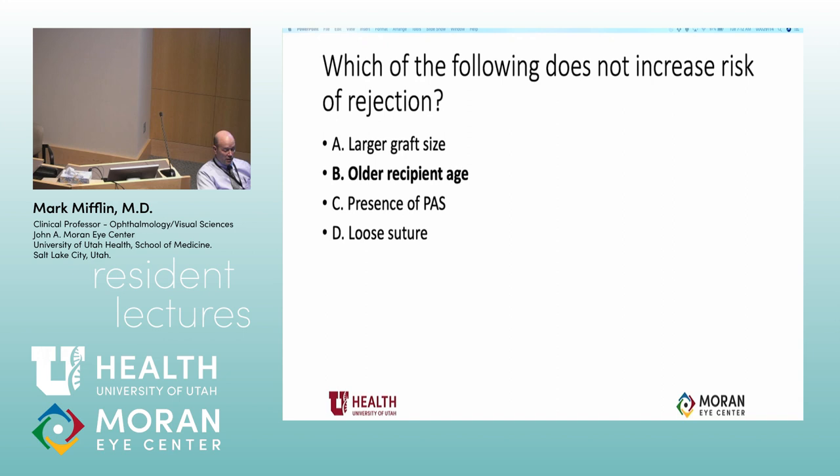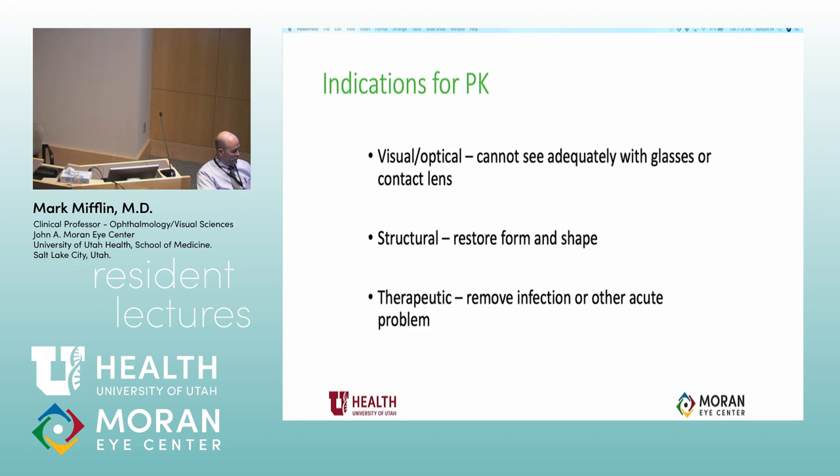Older recipient age is actually associated with less rejection because the recipient immune system is weaker — so you're less likely to reject. Now we're going to move into the lecture.